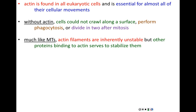Much like microtubules, actin filaments are quite unstable. They are more likely to fall apart than to assemble. What stabilizes actin filaments is not the anchoring points — that was the story for microtubules — but instead different accessory proteins that bind to actin filaments. That's what stabilizes actin and stops it from falling apart.